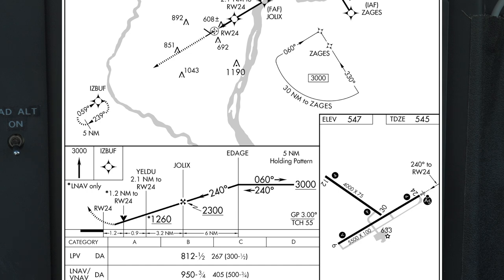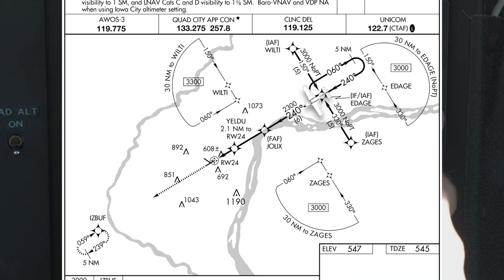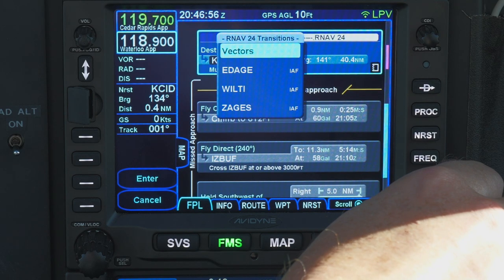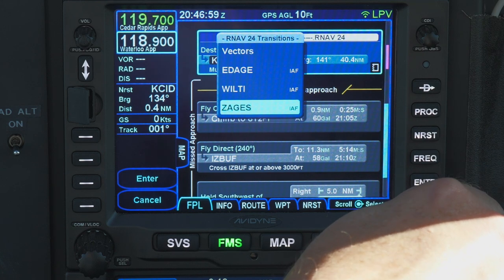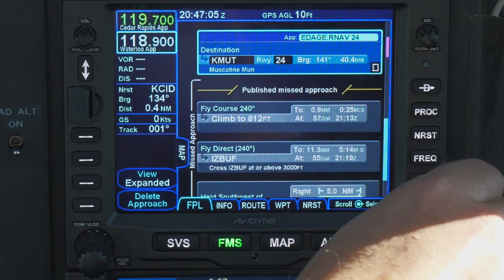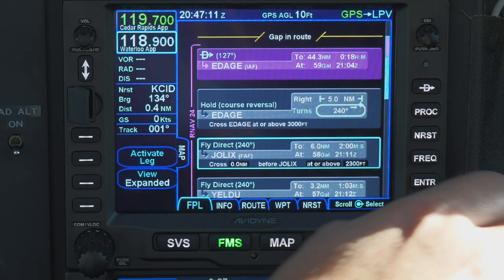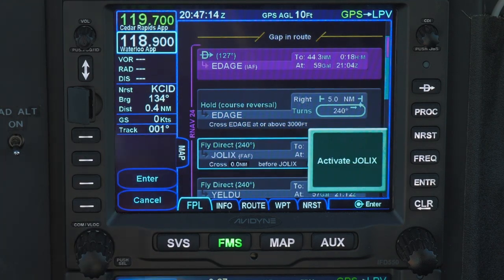Such is the case in our earlier example, the RNAV 24 at Muscatine, which has an altitude constraint along the final approach course at Edatch prior to the final approach fix. Without Edatch in your flight plan, how would you know when to descend? You might wing it by looking at your position on the approach plate on the iPad, but that's not how you're supposed to navigate under IFR, and you also lose the IFD's VNAV guidance to help you fly the step-downs. So here's a better way: rather than choosing Vectors to Final, load the approach from an initial approach fix, which will include all the step-down fixes. Then, once you know where the vector from ATC will let you join the final approach course, you can activate that leg — your location relative to step-down fixes will always be clear.